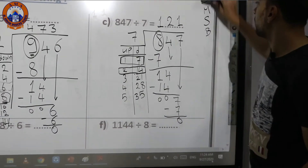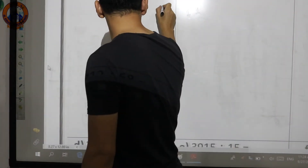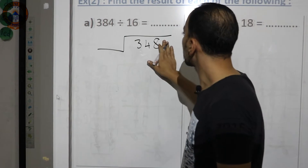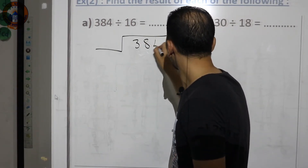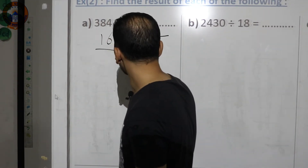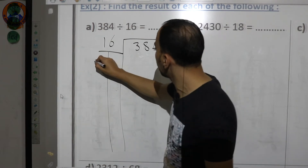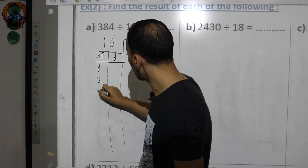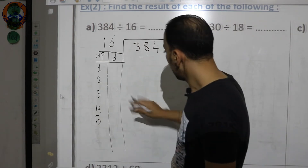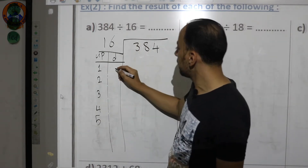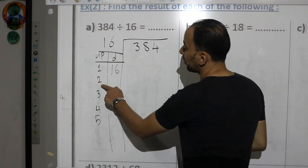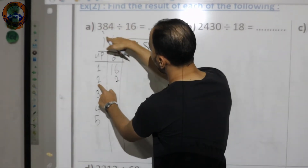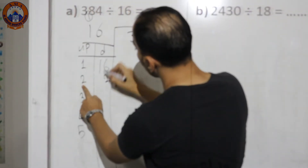Now we're going to divide by a two-digit number, using the same steps. The problem is 384 divided by 16. I'll build the times table of 16: 16×1=16, 16×2=32 (2×6=12, put 2 carry 1; 2×1=2 plus 1 equals 3), so 32.